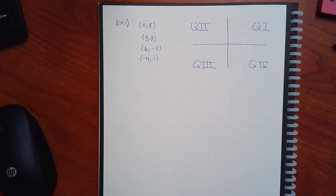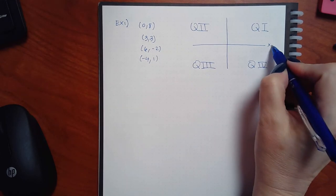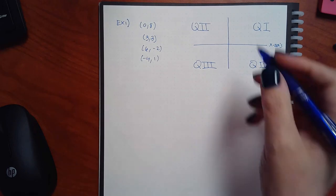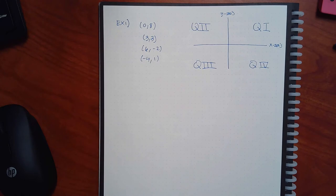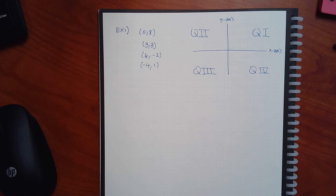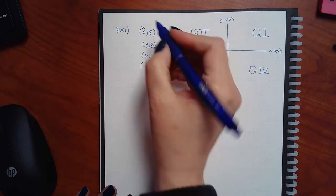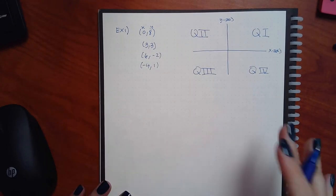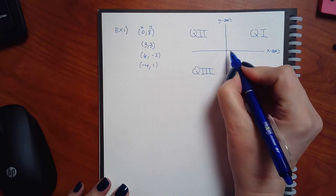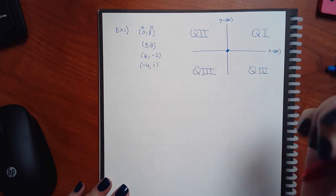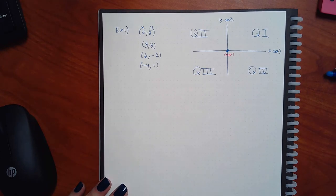The horizontal line is the x-axis and the vertical one is the y-axis. Whenever you're given coordinates they are called an ordered pair, which means the number in the first position means something specific and the number in the second position means something different. For our rectangular coordinate system the first position tells us the x coordinate and the second position tells us the y coordinate. The center is zero zero — that point is called the origin, and you always start there when plotting points.